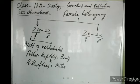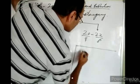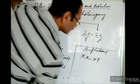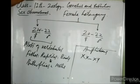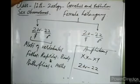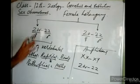In mammals, both ZW/ZZ and XX/XY conditions are found. Some mammals show male heterogamy and some show female heterogamy. But in fishes, reptiles, birds, and some butterflies and moths, we find female heterogamy only.